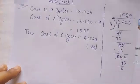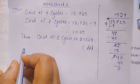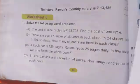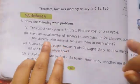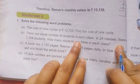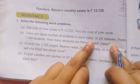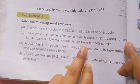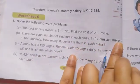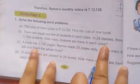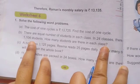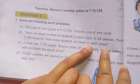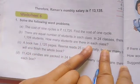Now we solve question number 2 (B). There are equal number of students in each class. In 24 classes there are 1,104 students. How many students are there in each class?